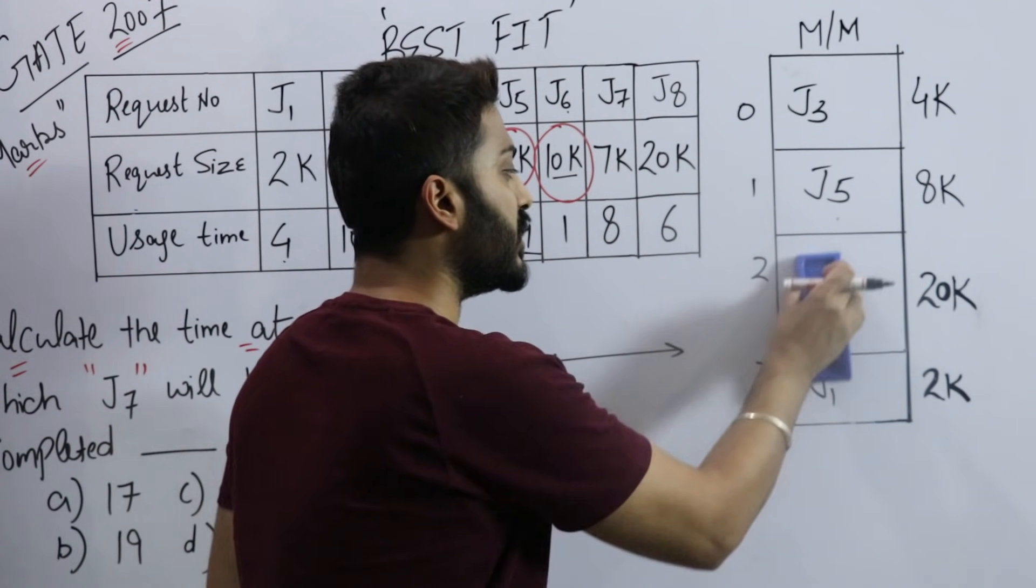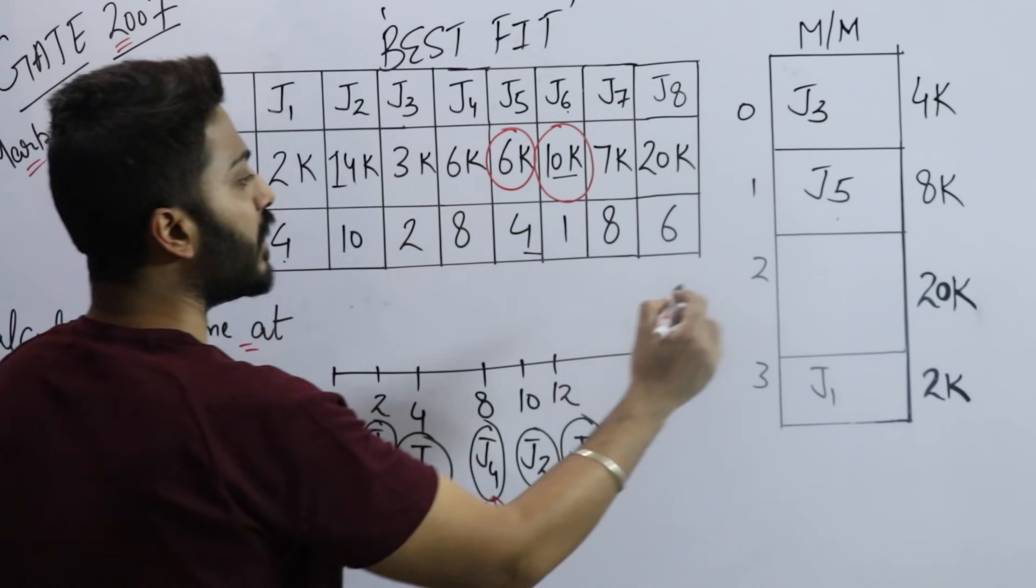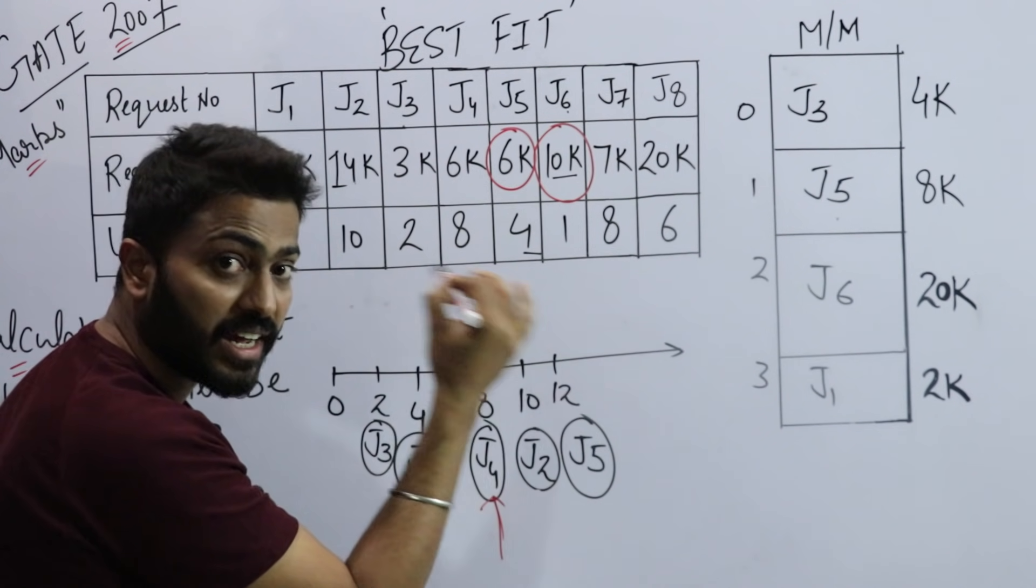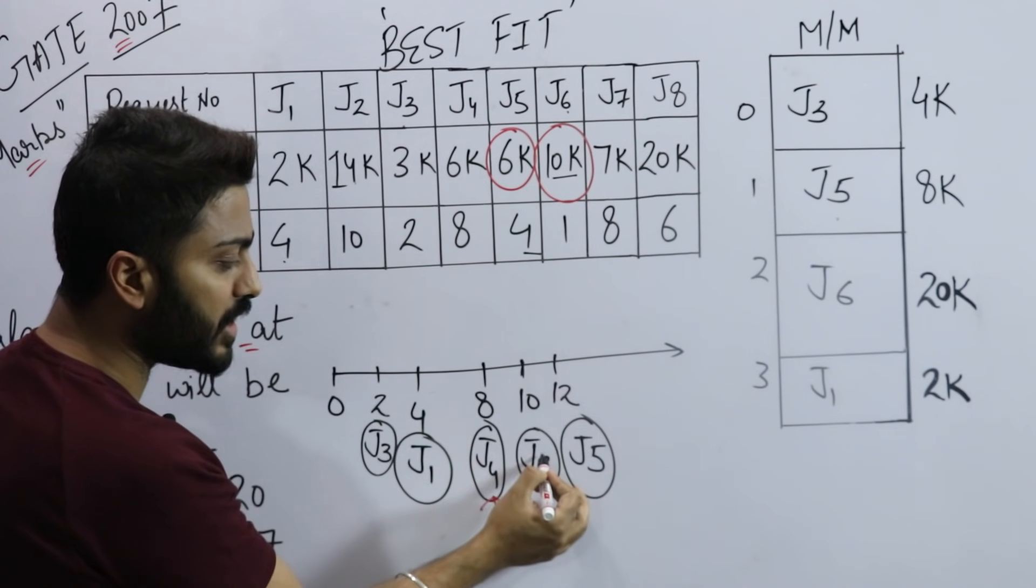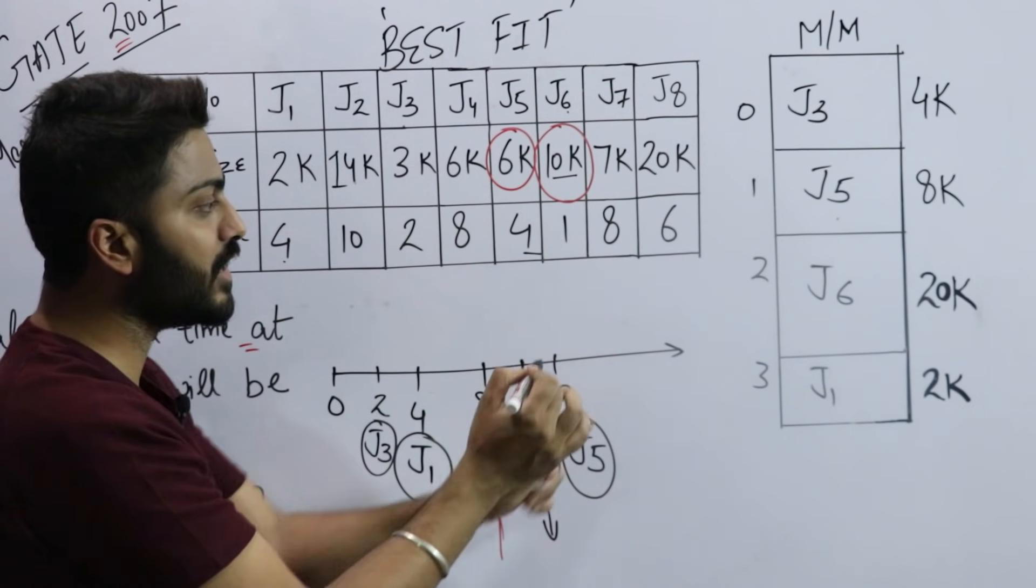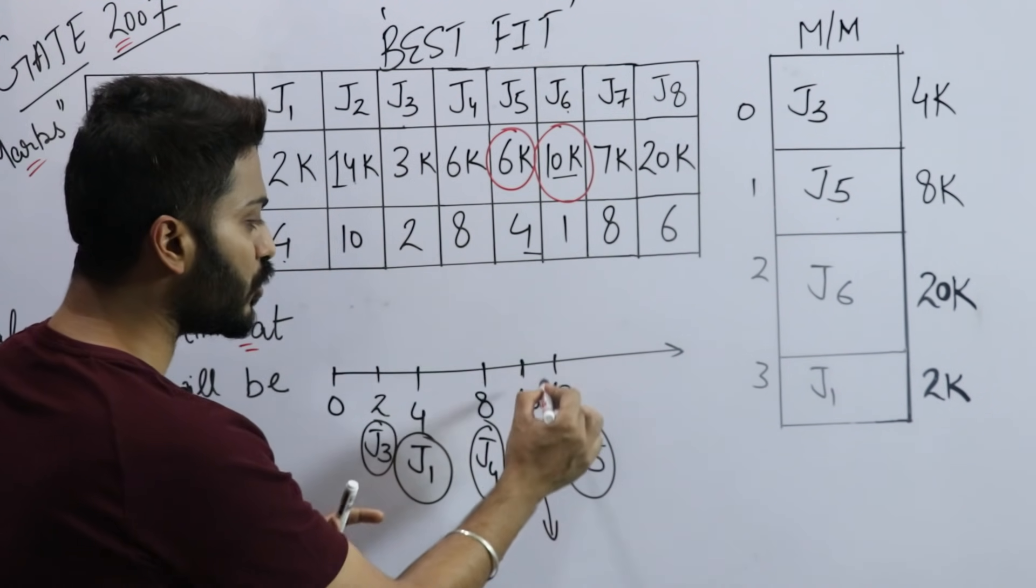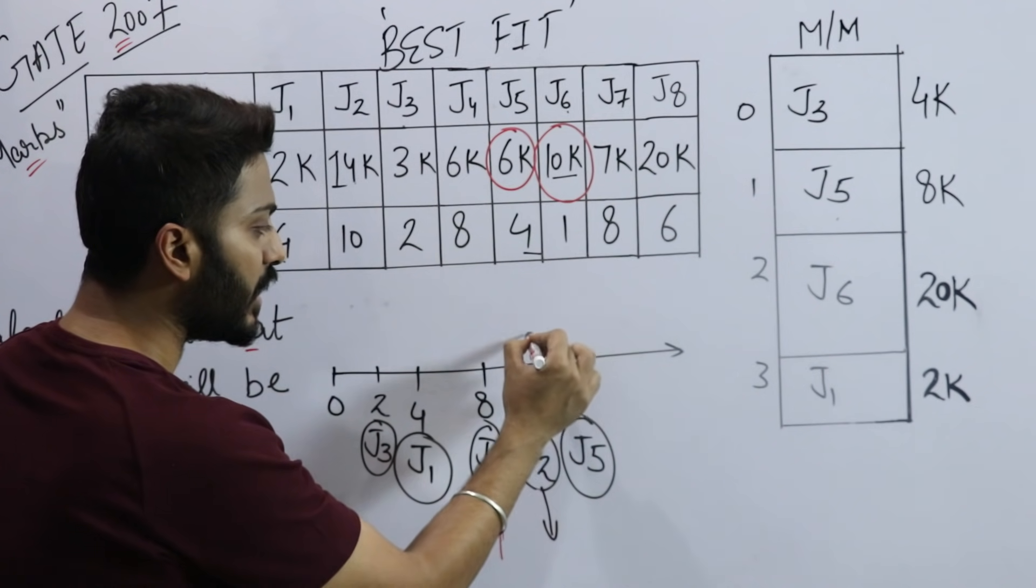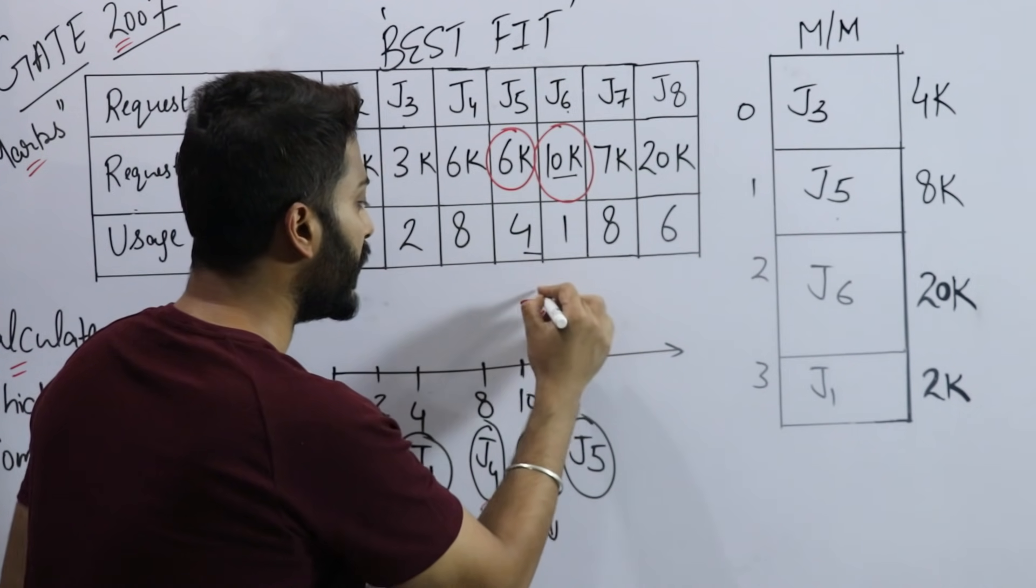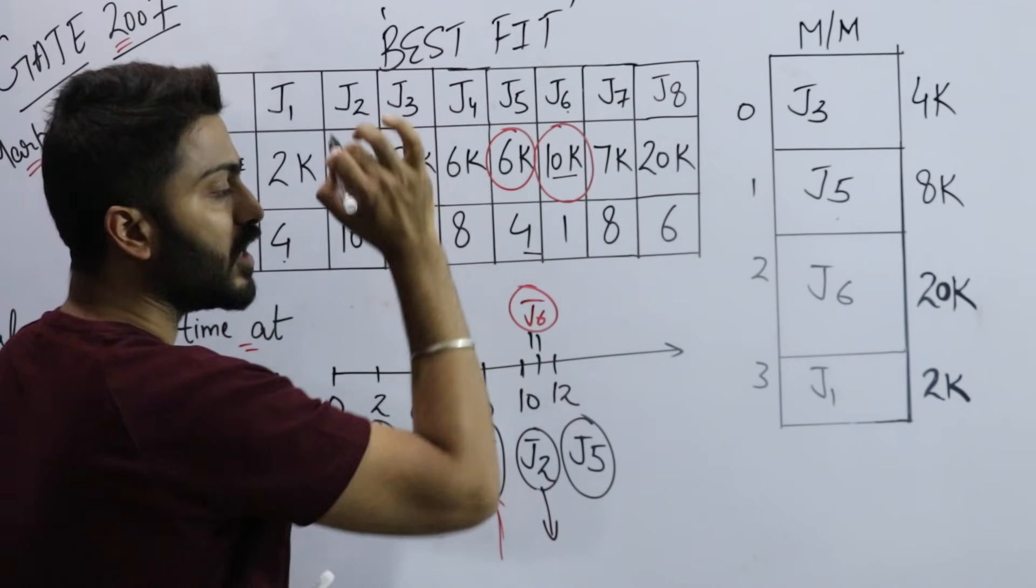Although other slots have become free at time 2 and time 4, there's no benefit in removing them. This is contiguous allocation - we cannot divide and place. So 10k can only go here. We have to wait for J2, and J2 will finish at time 10. At time 10, J2's work is complete. I remove J2 from there and place J6.